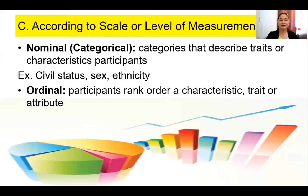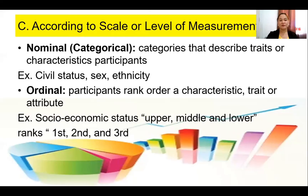The second level is ordinal. Ordinal is participants' rank or order — rank order of characteristics. For example, socioeconomic status: upper, middle, and lower. That's in order, in a range. Or you have ranks: first, second, and third. That's ordinal.